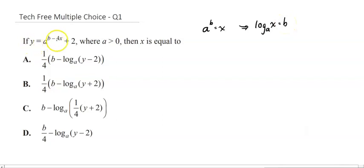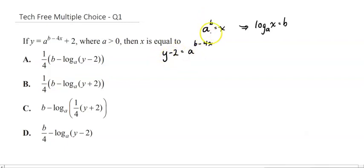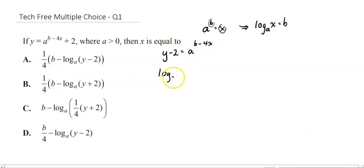Now the question's a little bit wonky here because it's got this plus two on the end, so we need to move that plus two first to the other side. That gives us y minus two equals a to the b minus four x. Now even though it looks really complicated, we're really in this form where y minus two is the x, a is the a, and b minus four x is the b — which means we can write this in logarithmic form: log base a of (y minus two) equals b minus four x.